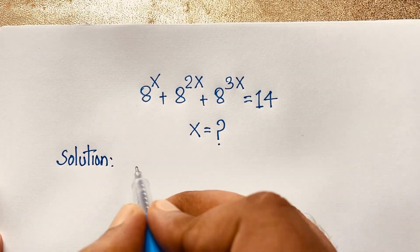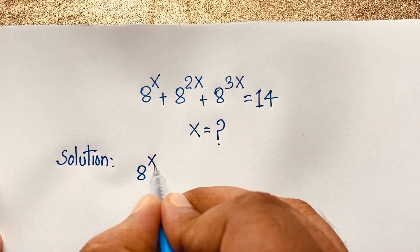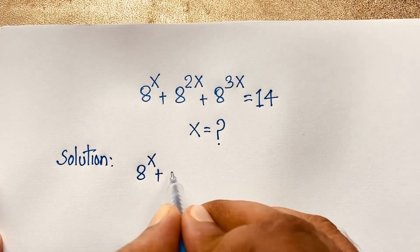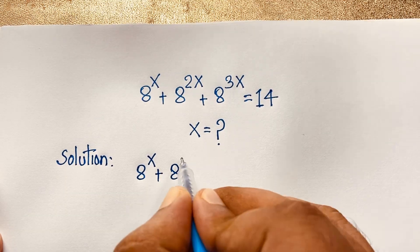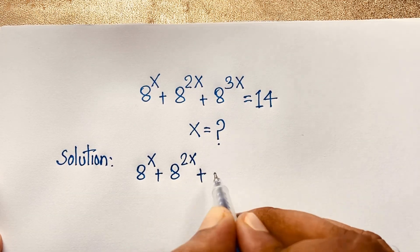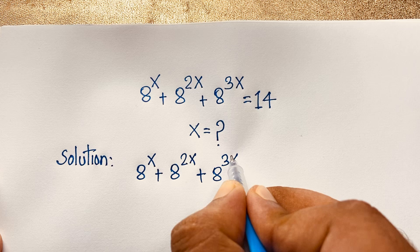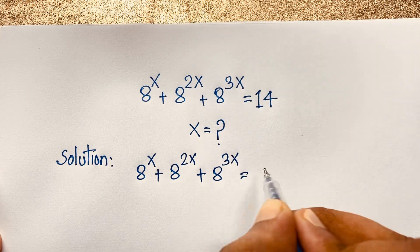Our question is: 8 to the power x plus 8 to the power 2x plus 8 to the power 3x is equal to 14.